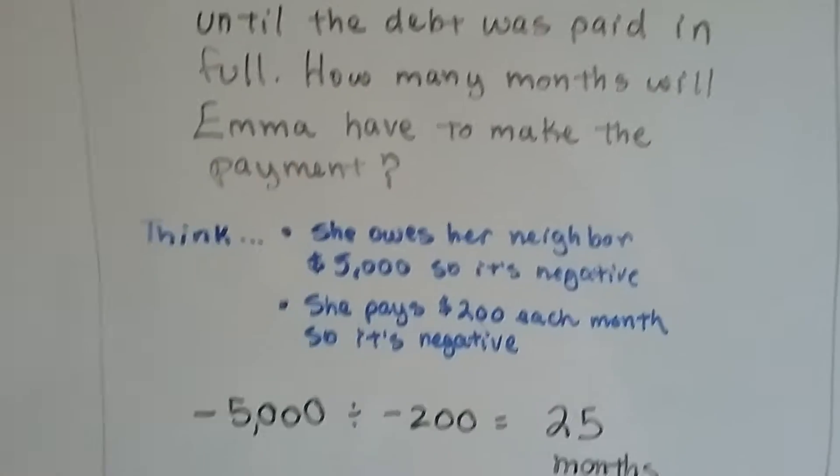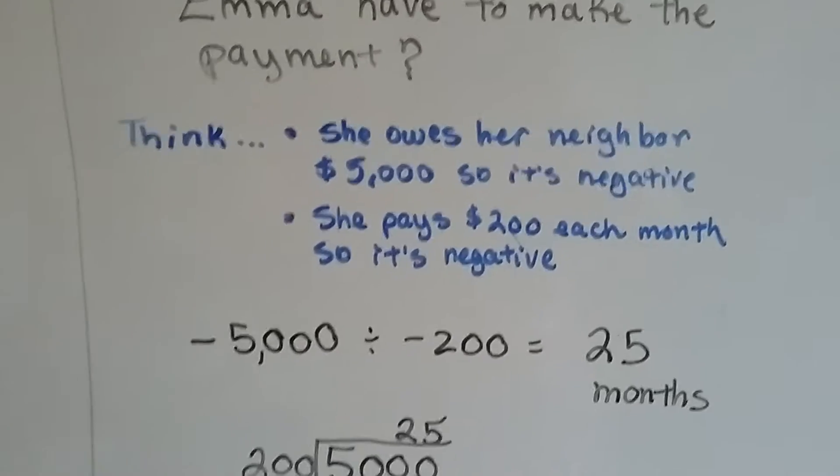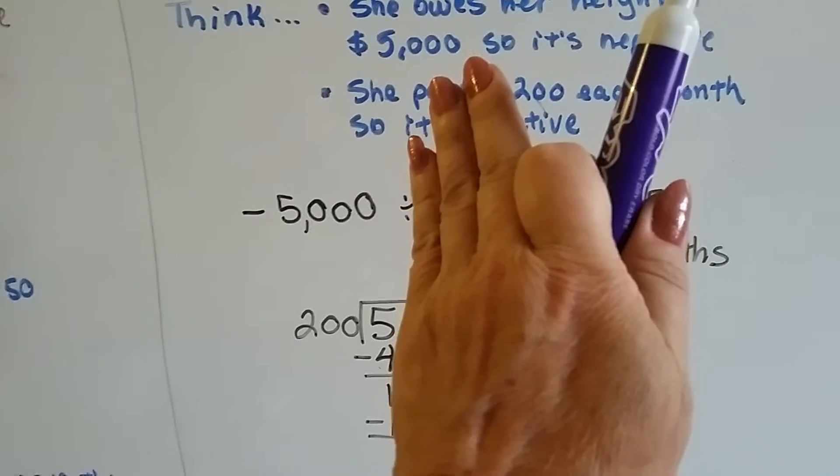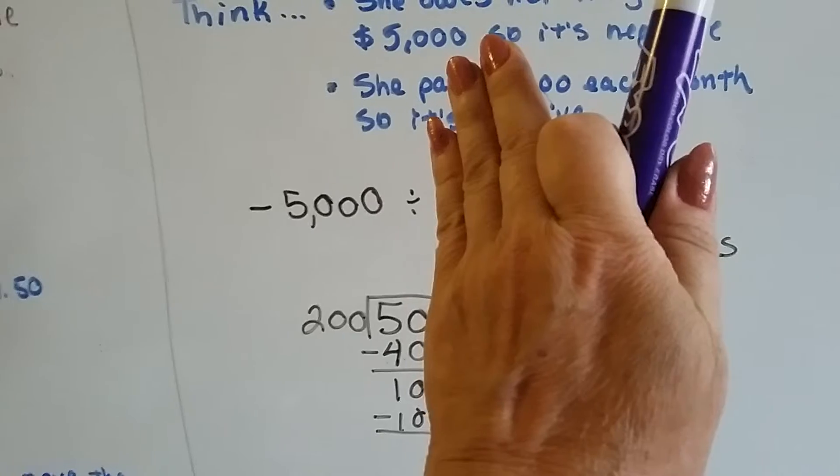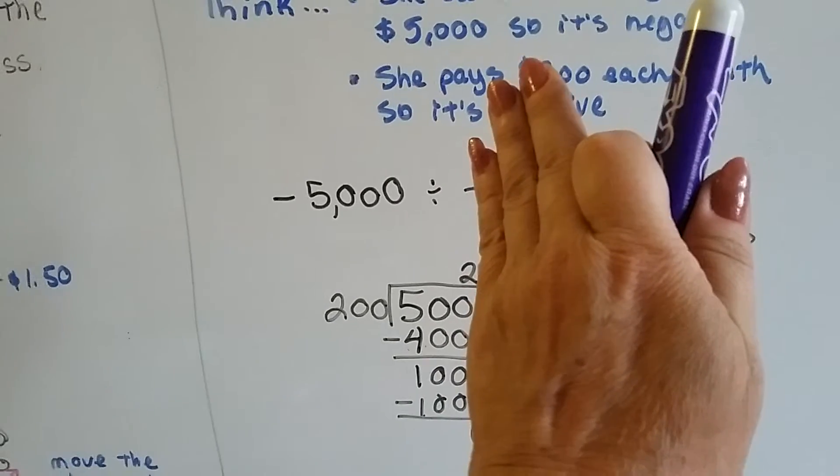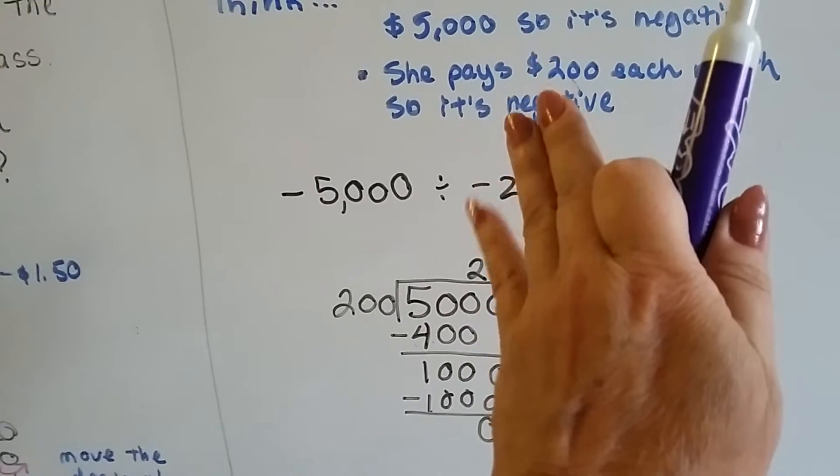So we do negative 5,000 divided by negative 200. And we do our long division. How many times can 200 go into 5? It can't. Into 50? It can't. Into 500? Oh, it can.